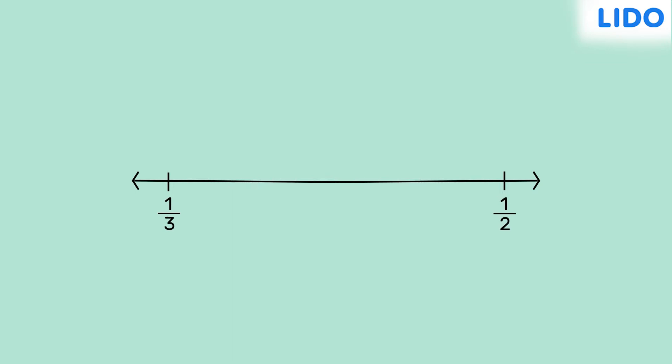we can say that 1 by 3 is 1 third of a unit's distance from 0, and 1 by 2, or half, is half a unit's distance from 0. And this would be 1 unit.